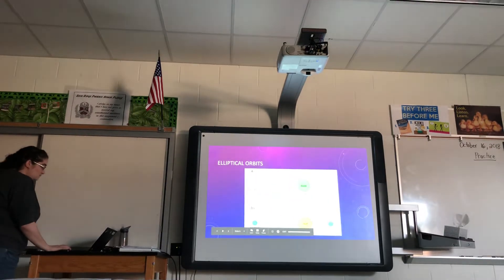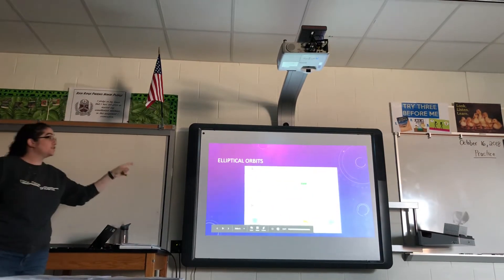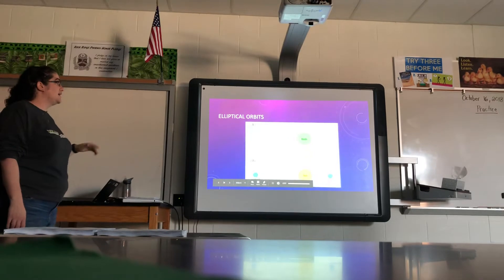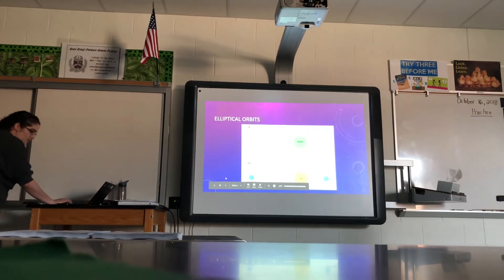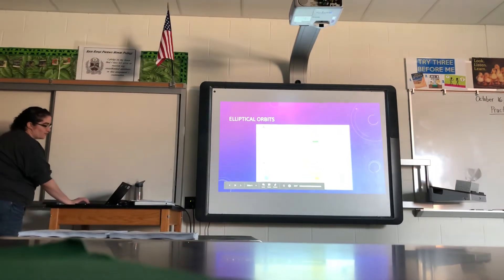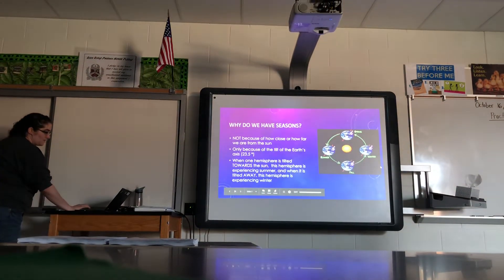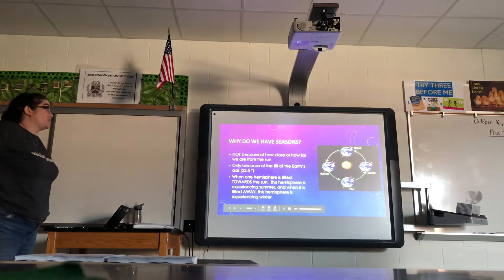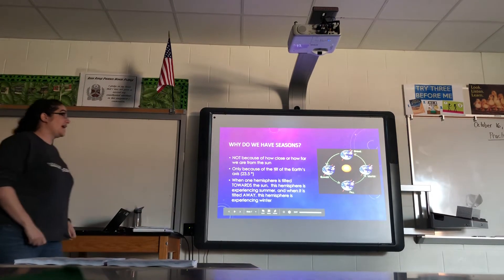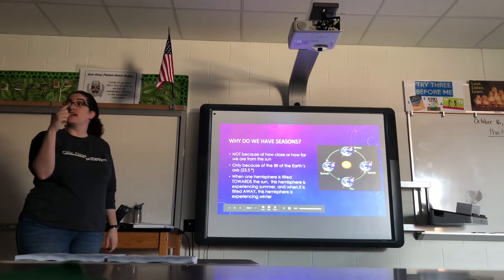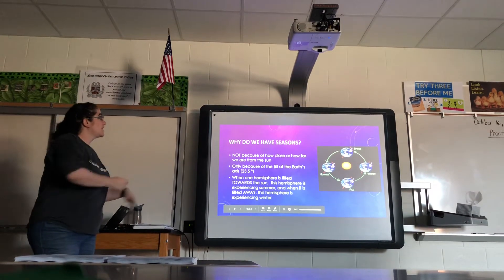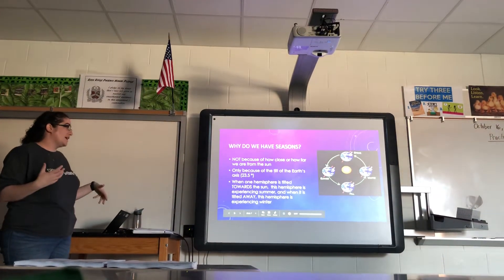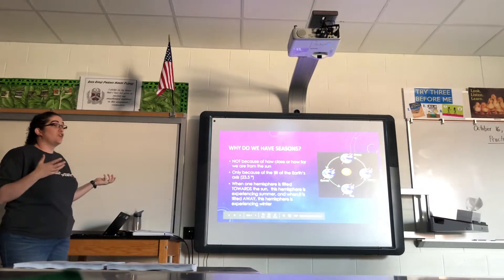Perigee is when the moon is closest to the earth and apogee is when it's farthest away. Seasons are not caused by our distance from the sun but by the tilt of the earth's axis — we also learned about precession, where the earth wobbles on its axis. When one hemisphere is tilted toward the sun it experiences summer; when tilted away it experiences winter. The earth is always on a tilt.